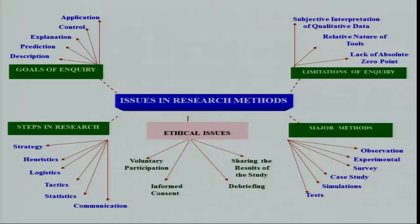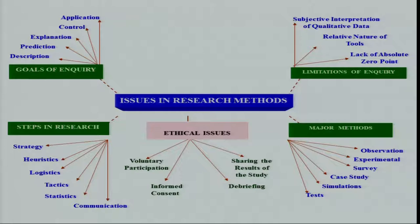The steps in research include five different elements: the strategy we adopt — whether experimental or correlational; the literature in hand, called heuristics; the tools used, called logistics; the methodologies used, called tactics; and how we analyze the data, which is called statistics. After completing all these things, we try to communicate this research.